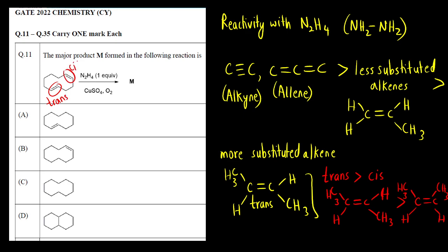So which is more reactive? Trans is more reactive, so the trans alkene will be reduced to an alkane and the cis alkene will remain as it is. Therefore the correct answer is option C. I hope this answered your question, thank you.